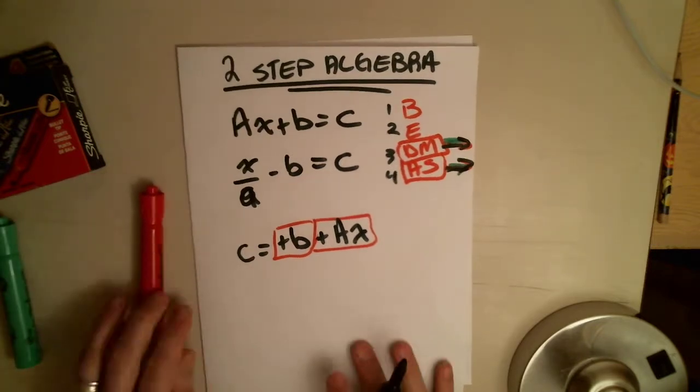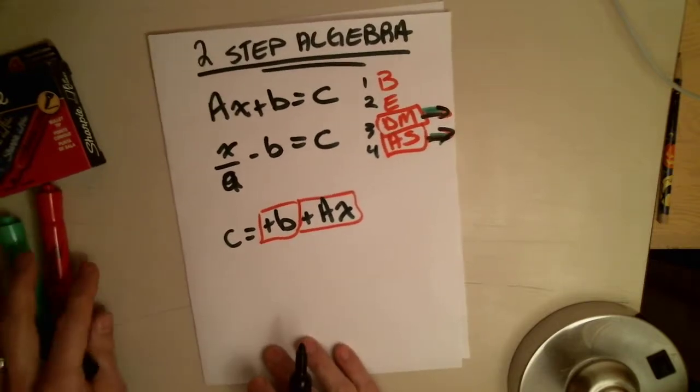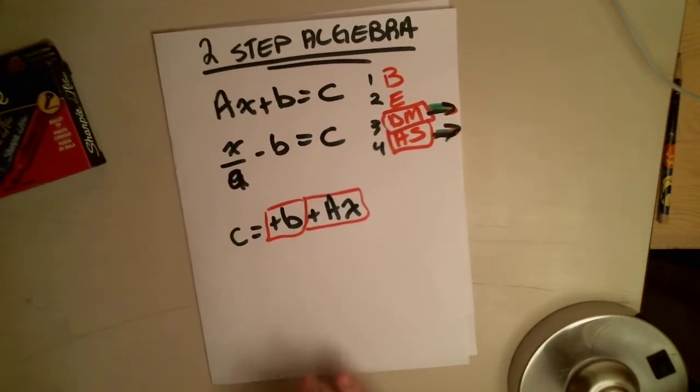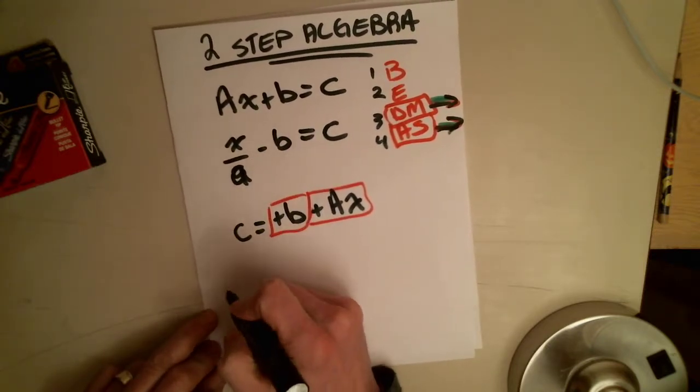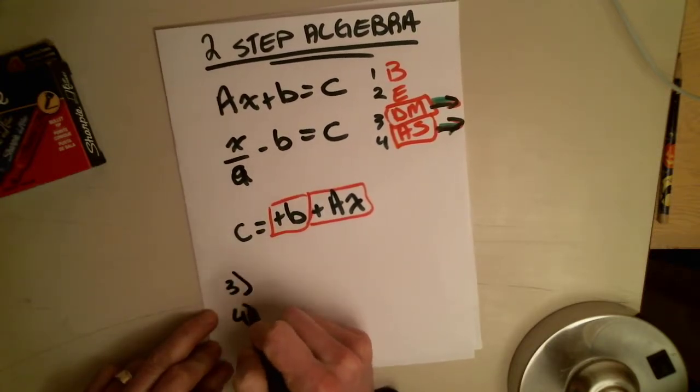So the main rules of algebra, number one is simplify and collect like terms. Number two is get x's to one side. Where you're concerned at this two-step algebra is rule number three and rule number four.